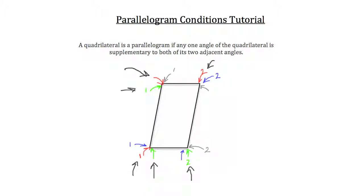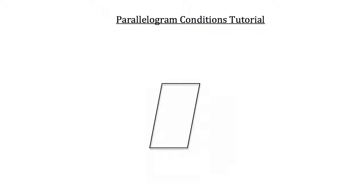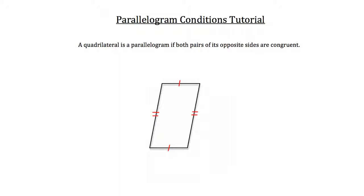Now let's take a look at a third possible way to establish that a quadrilateral is a parallelogram. A quadrilateral is a parallelogram if both pairs of its opposite sides are congruent, as you can see here with the red congruency tick marks. If both pairs of opposite sides are congruent to each other, then this quadrilateral is a parallelogram.